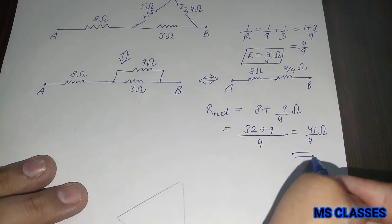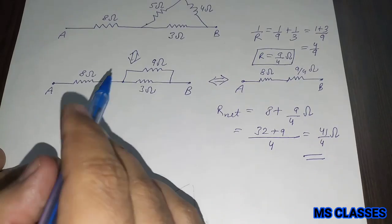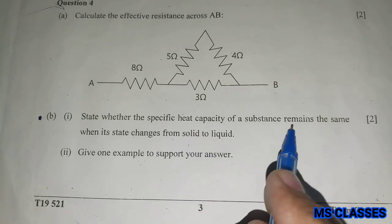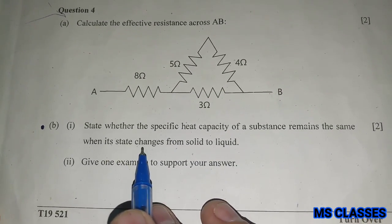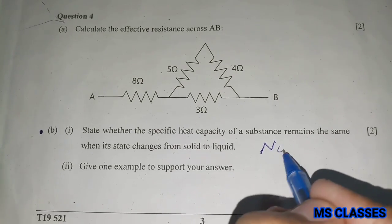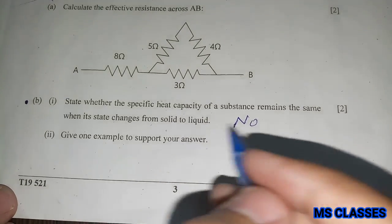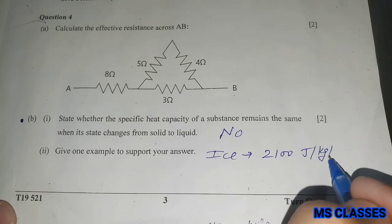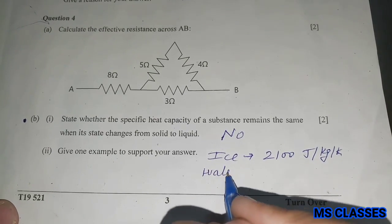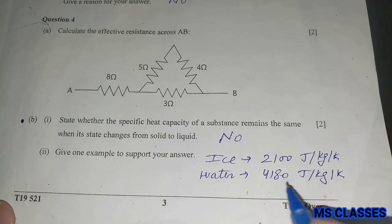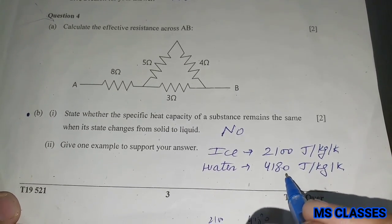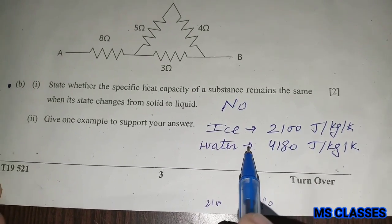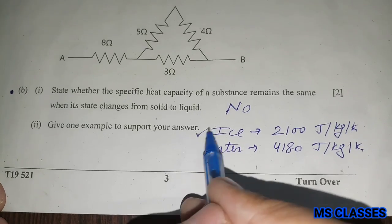Next, state whether the specific heat capacity of a substance remains the same when its state changes from solid to liquid. No. Give an example to support your answer. If you take ice, the specific heat capacity is 2100 joule per kg per kelvin, and if you take water, the specific heat capacity is 4180 joule per kg per kelvin. So here you can see that the specific heat capacity is different when its state changes from solid to liquid.